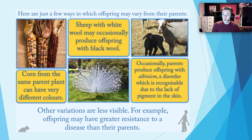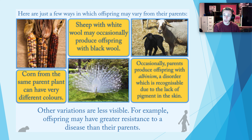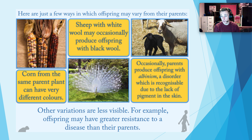So these are some of the ways that offspring can vary from their parents. Corn from the same parent plant could have very different colours. Sheep with white wool may occasionally produce an offspring with black wool. Occasionally, parents produce offspring with albinism — a disorder which means there's no pigment or colour, so it's completely white. Other variations are less visible — for example, maybe you may be less likely to get sick than your parents, maybe you have a greater resistance to disease, or equally you might be more likely to get sick.